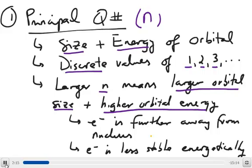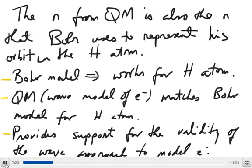Interestingly, this n from quantum mechanics is also the n that Bohr uses to represent his electron orbit in the hydrogen atom. This is an important meeting of the two models because the Bohr model works very well for the hydrogen atom — it describes all its properties with a fairly simple model. However, it doesn't work for atoms that contain more than one electron.